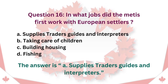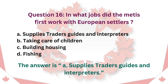Question 16: In what jobs did the Métis first work with European settlers? A. Supplies traders, guides and interpreters. B. Taking care of children. C. Building housing. D. Fishing. The answer is A. Supplies traders, guides and interpreters.